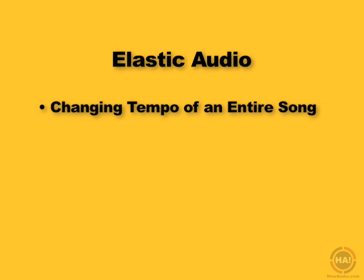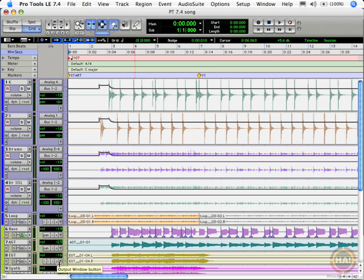In this next segment we're going to look at changing the tempo of an entire song. We're going to change the tempo and all the tracks are just going to speed up. For this example I'm using the same pop song I've been using at a tempo of 107 BPM — you can see that up in the tempo ruler at the top. Let's take a listen to it as is.